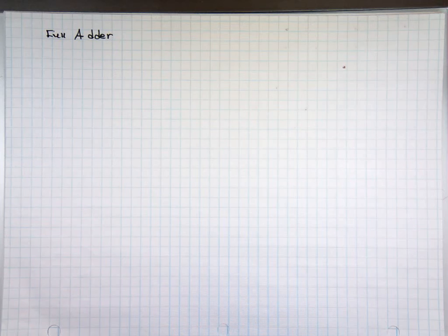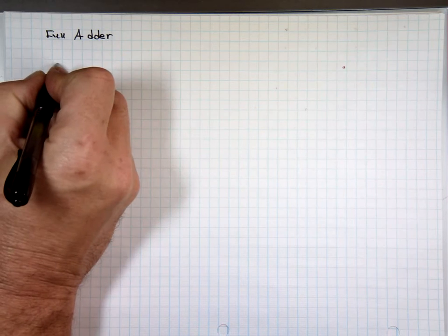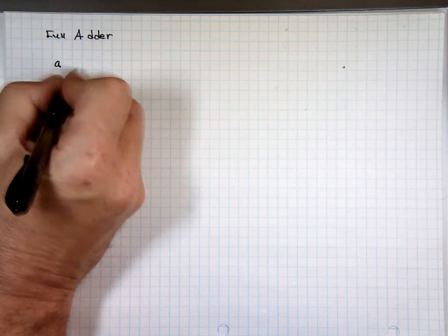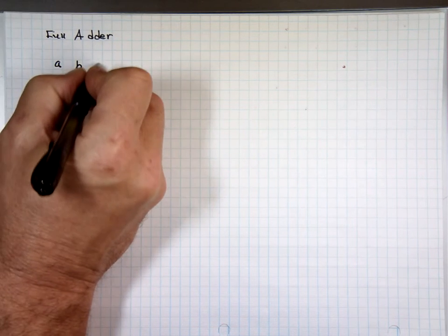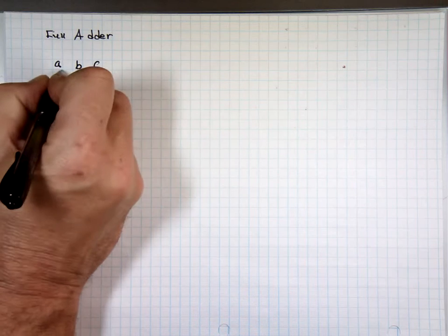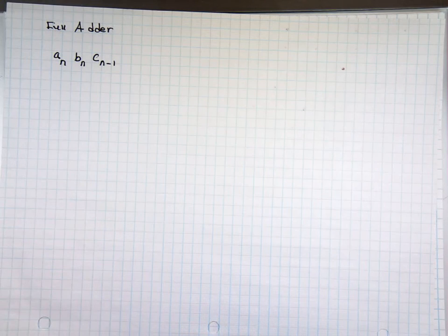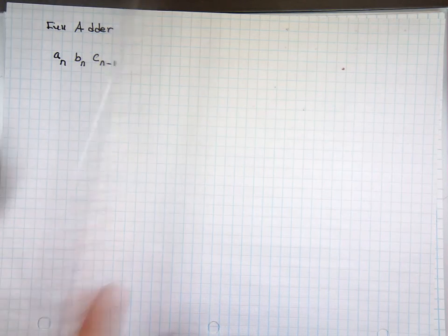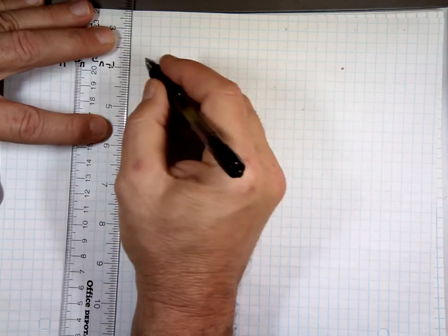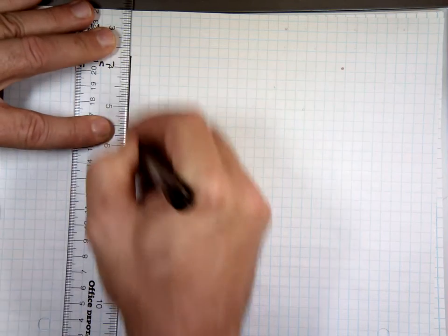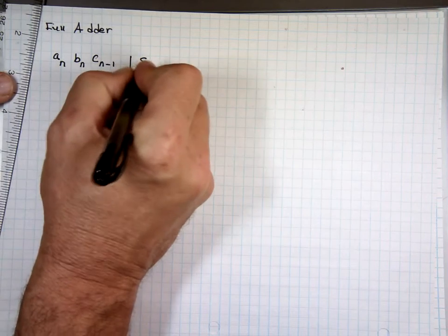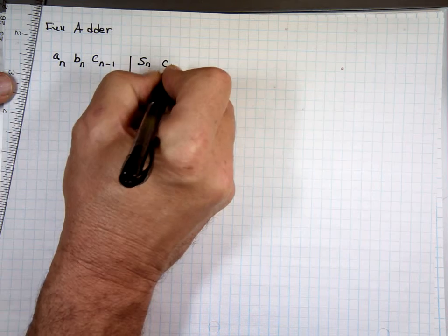Look at full adder. Again, a full adder basically you have three inputs: A, B, and the carry from the previous state. So called An, Bn, and Cn minus one. That's from the previous state. And the result will give you the sum and the carry out. So you have Sn and the carry to the next state.